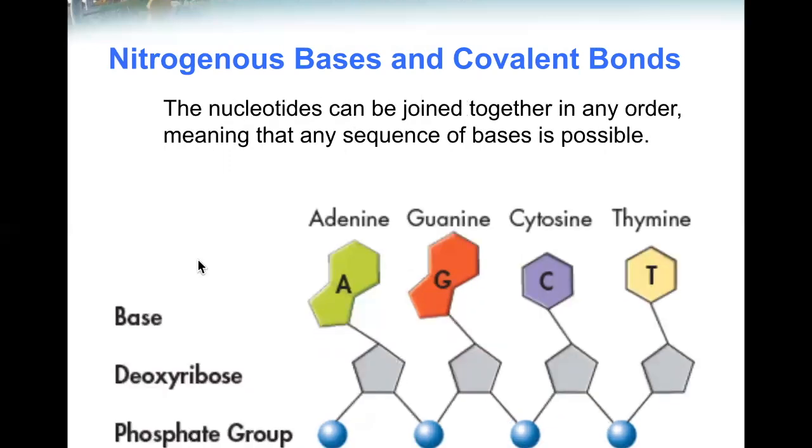The nucleotides can be joined together in any order, meaning that any sequence of bases is possible, whether AGCT or AGTC or GATC. Any of those orders work, including AAA, repeating the same base.